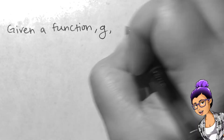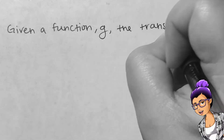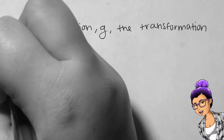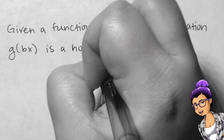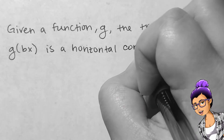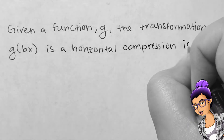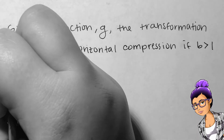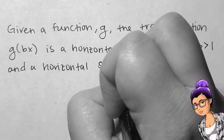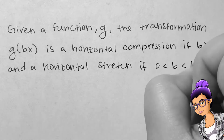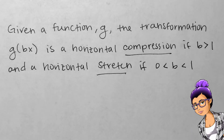In general, given a function g, the transformation g of bx is a horizontal compression by b if b is larger than 1, and a horizontal stretch by 1 over b if b is between 0 and 1.